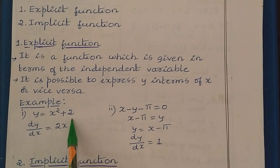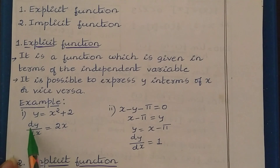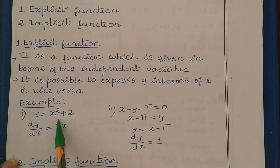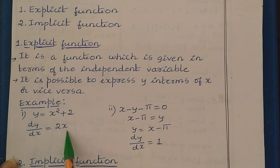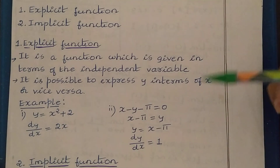Suppose if I tell you to differentiate this function with respect to x, then you can differentiate: dy/dx is equal to — the derivative of x squared is 2x, and the derivative of the constant 2 is 0.